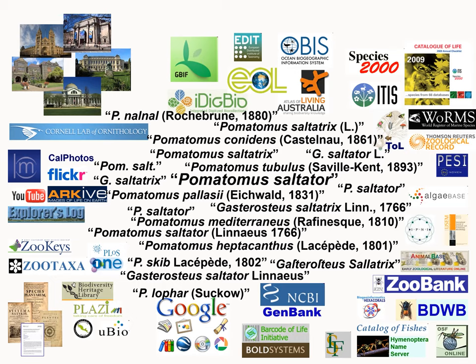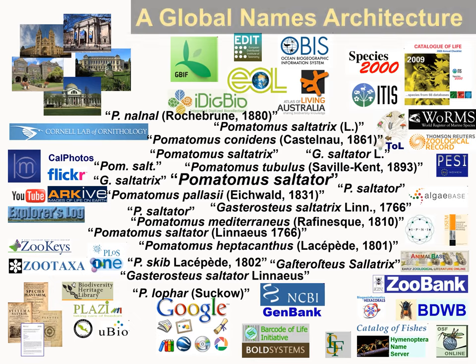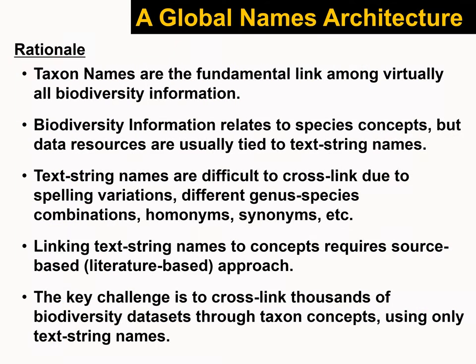So there's this taxonomic layer of complexity, and you end up with a big mess trying to connect the dots between all these different data sets. In bullet point form: taxon names are the fundamental link among virtually all biodiversity information. Biodiversity information relates to species concepts, but data resources are usually tied to text string names — and those aren't equivalent things. Text string names are difficult to cross-link due to homonymy, synonymy, and other historical problems. Linking names to concepts requires a source-based or literature-based approach, and the key challenge is to cross-link thousands of biodiversity data sets through taxon concepts using these text string names.